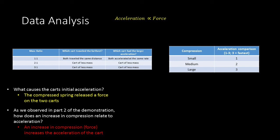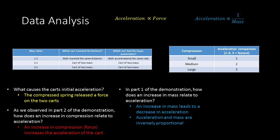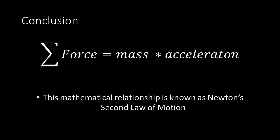Were you right? Let's pull out our other observation. How does an increase in mass relate to acceleration? An increase in mass leads to a decrease in acceleration. Therefore, we could state that mass and acceleration are inversely proportional to each other. So we now have two relationships. How can we put both of these relationships together in one equation? We could state that the sum of the forces is equal to mass times acceleration. This mathematical relationship is known as Newton's second law of motion.